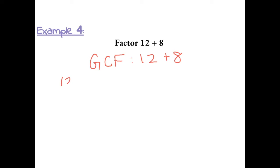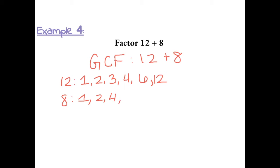First let's make a list of all of the factors of 12 and all of the factors of 8. Factors of 12 are numbers that 12 can be divided by: 1, 2, 3, 4, 6, and 12. Factors of 8 are numbers that 8 can be divided by: 1, 2, 4, and 8. So now we want the greatest number that these factors have in common, which is 4.